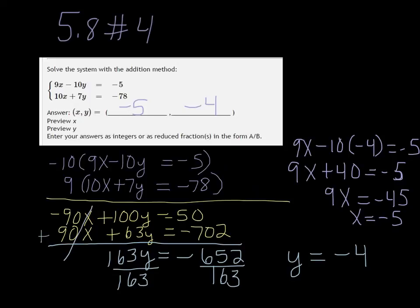I hope that helps. Of course I multiplied the top by negative 10 and the bottom by 9. Another alternative is to get rid of the Y's—you can multiply the top by 7 and the bottom by 10. That will wipe out the Y's so you can solve for X. It does not matter which one you do. Thank you.